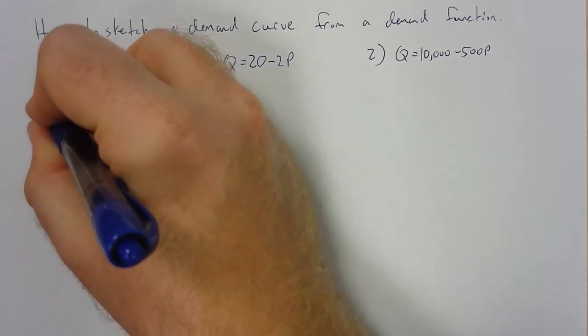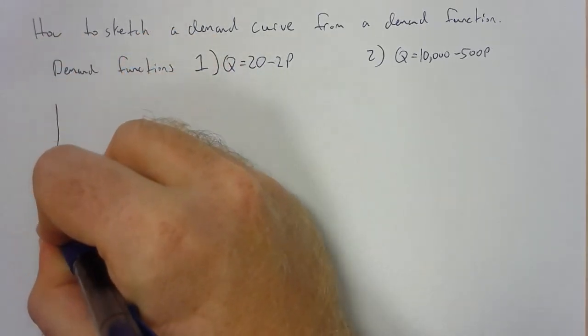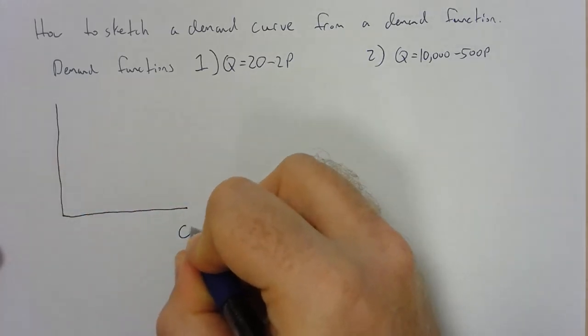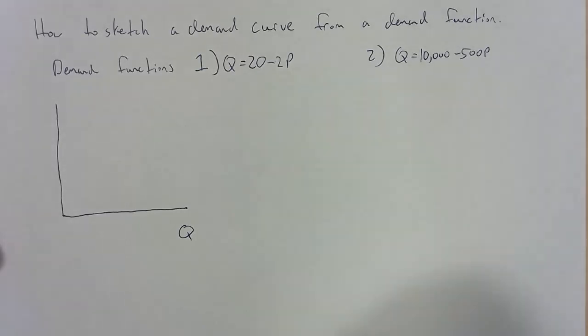So step one is going to be to create the graph. Remember to put quantity on the x-axis and price on the y-axis. The trick here is going to be to figure out where the intercept is going to occur on that price axis.